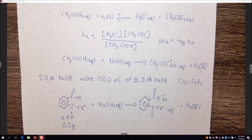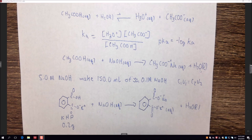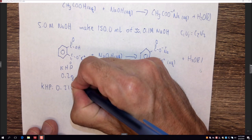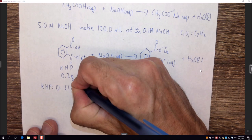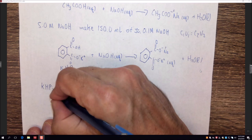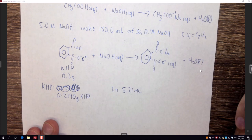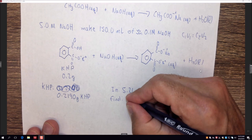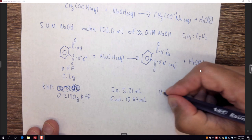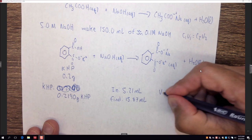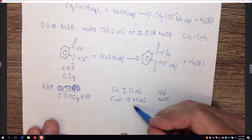In our example, we used 0.2190 grams of KHP. The initial burette reading was 5.21 milliliters and the final burette reading was 15.87 milliliters, meaning the volume of NaOH used was 15.87 minus 5.21 = 10.66 milliliters. With this information we can calculate the precise concentration of the NaOH solution.